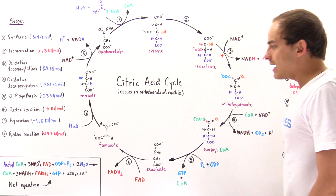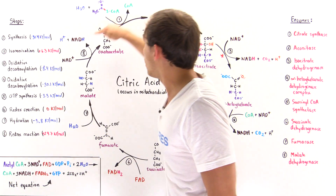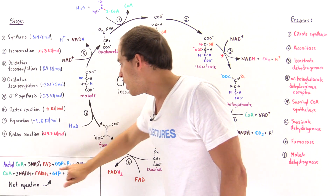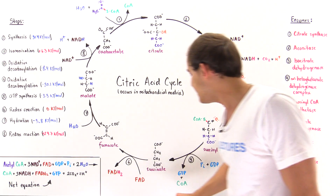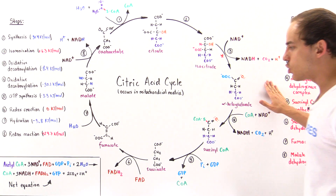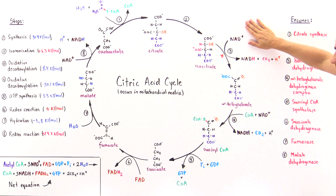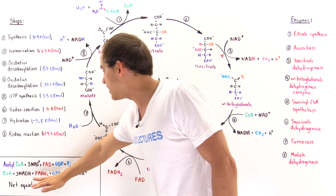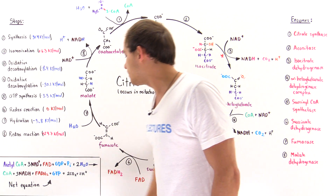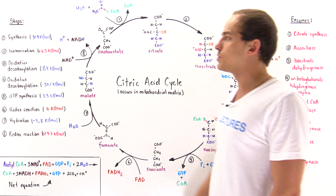If we sum up all these reactions, this will be the net equation of the citric acid cycle. We input one acetyl-coenzyme A, three NAD+ molecules, one FAD molecule, one GDP, one inorganic orthophosphate, and two water molecules. We produce coenzyme A, three NADHs (one in step three, one in step four, one in step eight), one FADH2 (in step six), one GTP (in step five), two carbon dioxides (one in step three, one in step four), and two H+ ions.